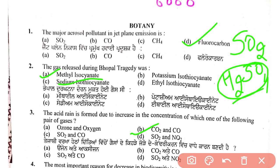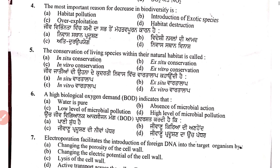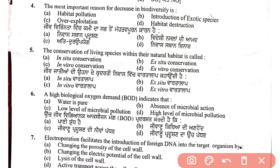Fourth question: the most important reason for decrease in biodiversity. The reasons include habitat pollution, over-exploitation, and introduction of exotic species, but the most important factor is habitat destruction.